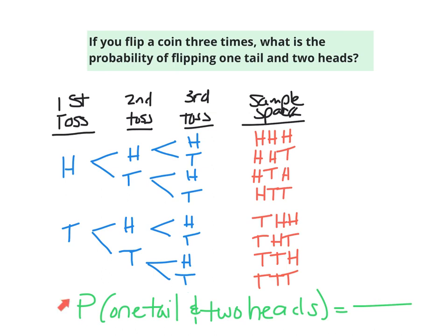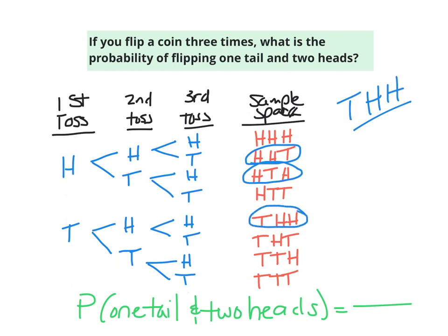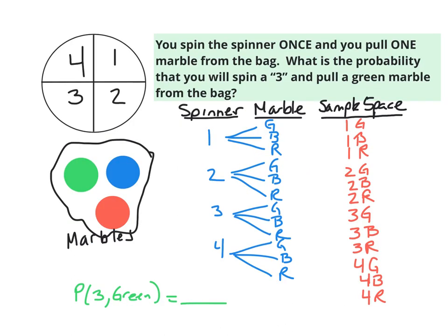In this final example, I'm looking for the probability of flipping one tail and two heads. The order doesn't matter. Here's one outcome of one tail and two heads, here's another, and here's a third. That's it — three outcomes of one tail and two heads out of eight possible outcomes, so the probability is three-eighths.